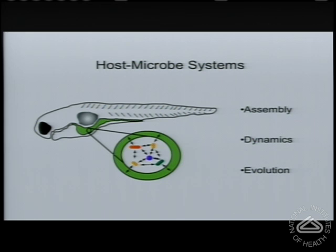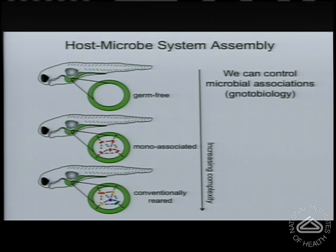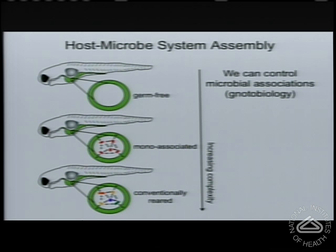I'm going to tell you about three different kinds of systems-level properties of host-microbe systems: how these systems assemble, what their dynamics are over time, and at the end, how these systems evolve in animal history. The zebrafish model is really useful for this because we can modulate the complexity of these systems. We have methods to derive germ-free or entirely sterile animals, and then use that as a platform to build up increasingly complex systems from mono-associated systems all the way to the recapitulation of an entirely complex community with a natural inoculum.